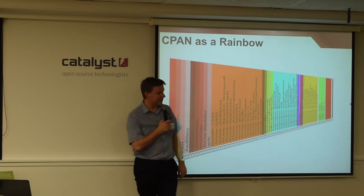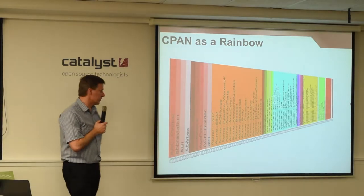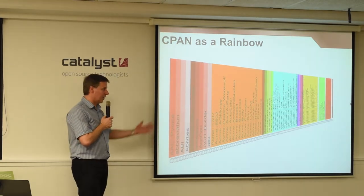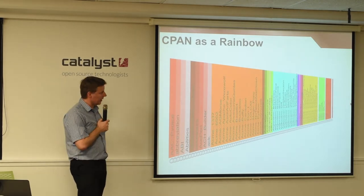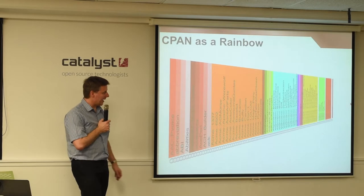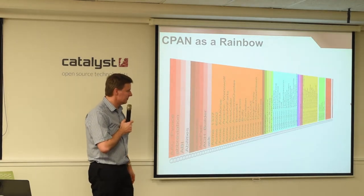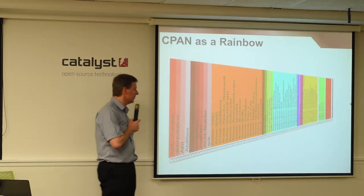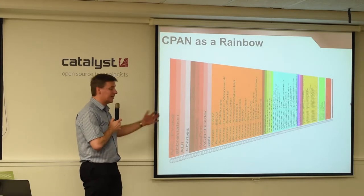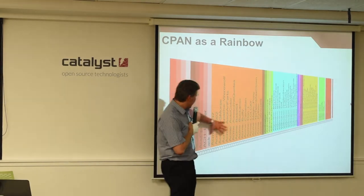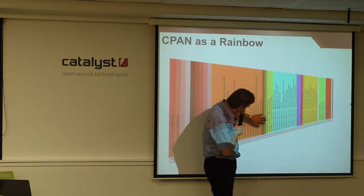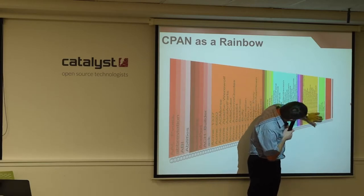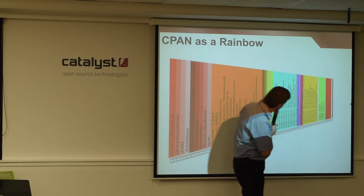This is the ACME namespace, which exists for joke modules. The idea is that you wouldn't go there for something you were going to include in production — but many have. There's some cool code there. That orange area is ACME. A bit further along there are some algorithm modules, some Apache modules, DBD which is the database drivers, and DBI off into the world. I've put along the bottom this chain — basically I've just put these in order, like a list, and they're all links in a chain.